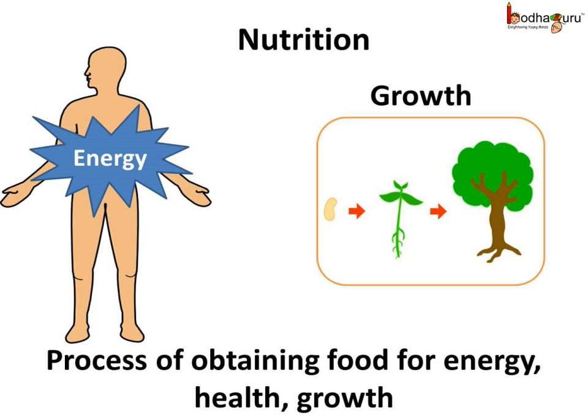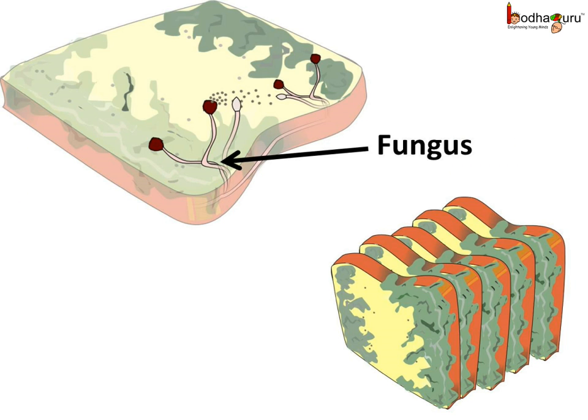You may have heard that we need food for nutrition. So what is nutrition? Living things need food for energy, growth, and so on. We can say nutrition is the process of obtaining food necessary for health, energy, and growth. Green plants make their own food for nutrition through photosynthesis.